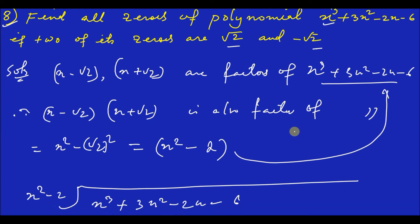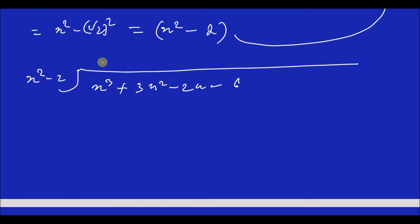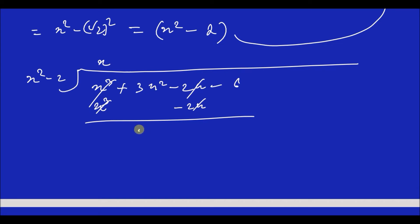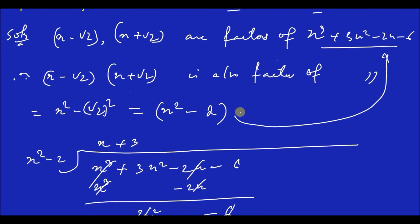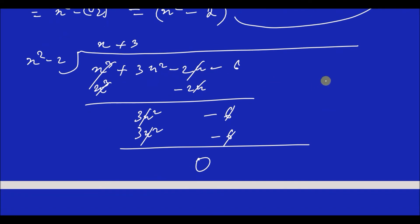Now dividing x cubed plus 3x squared minus 2x minus 6 by x squared minus 2: x cubed divided by x squared gives x. Then minus 2 into x gives minus 2x. We have 3x squared, and minus 6 remains. x squared into 3 gives 3x squared, and minus 2 into plus 3 gives minus 6. Minus 6 minus minus 6 equals 0.